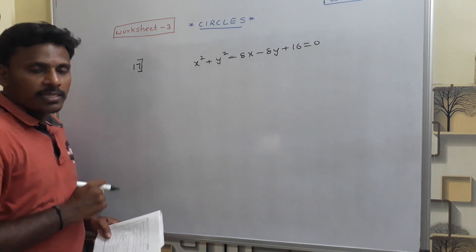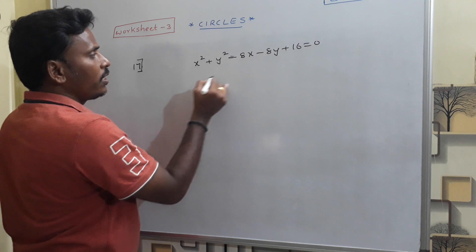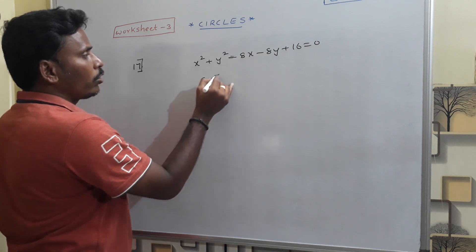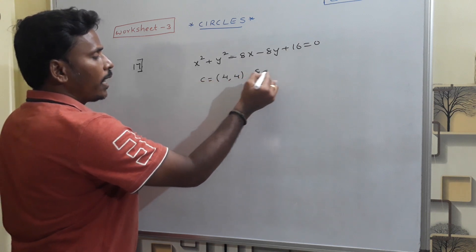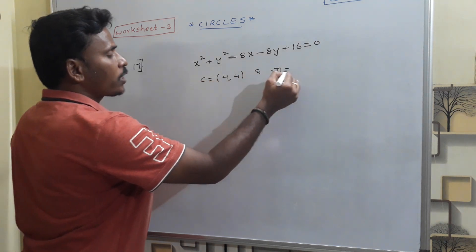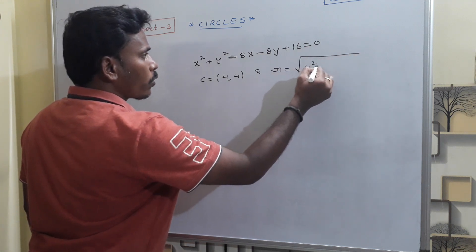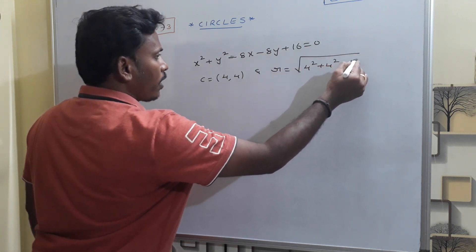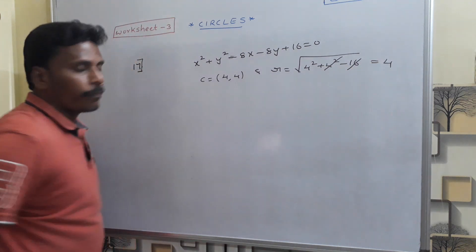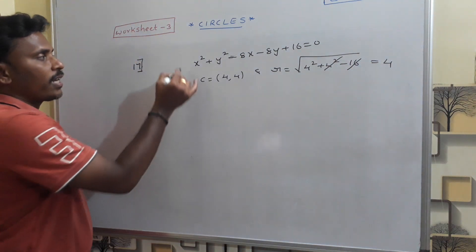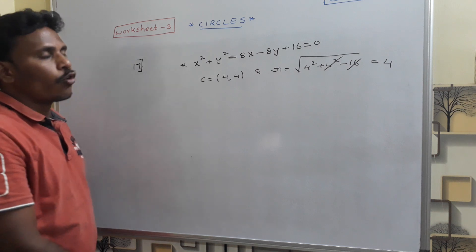Our first step is to find the center and radius. The center of this circle is (4, 4). The radius is √(4² + 4² − 16) = √16 = 4. So the center is (4, 4) and radius is 4.